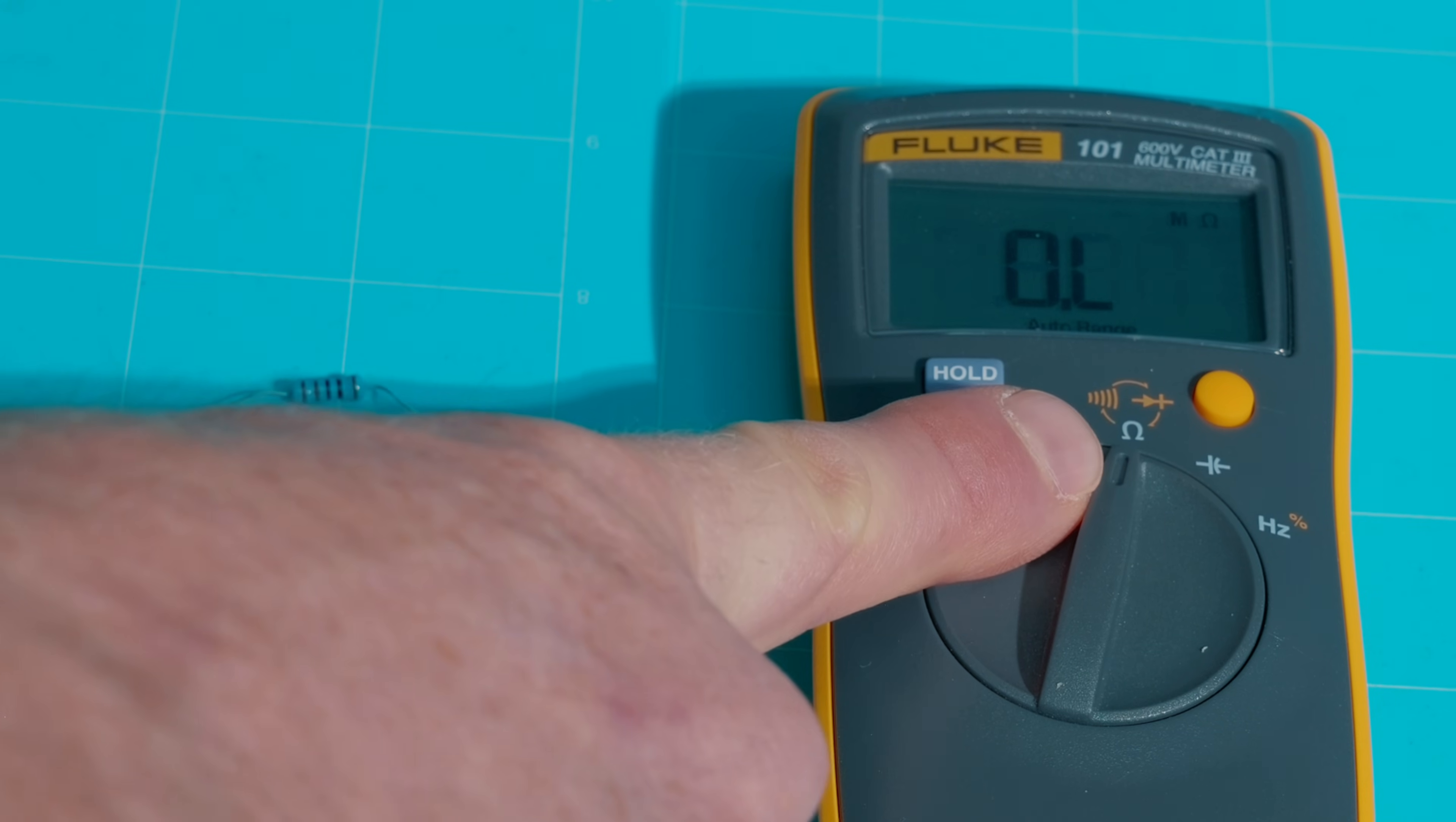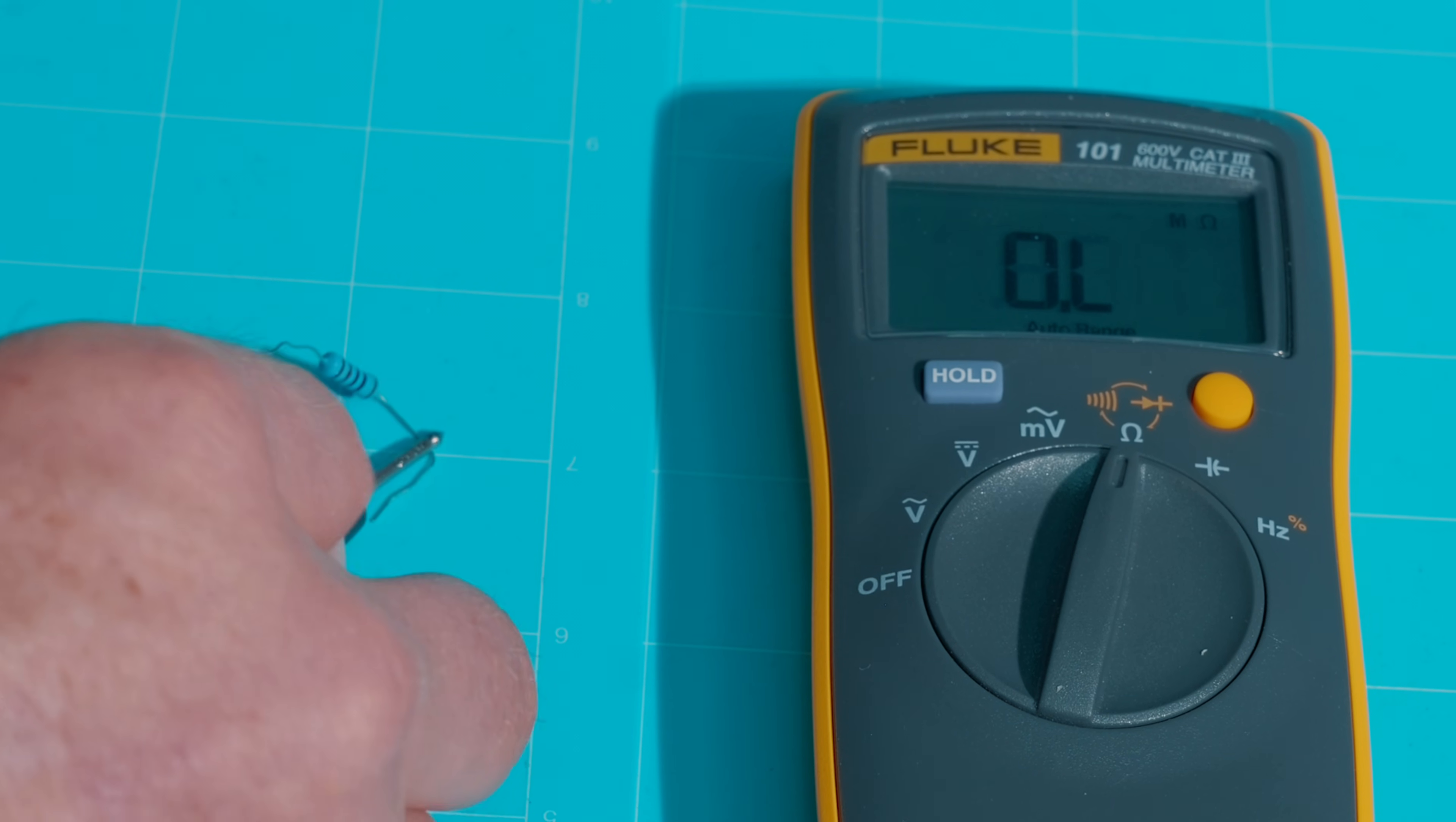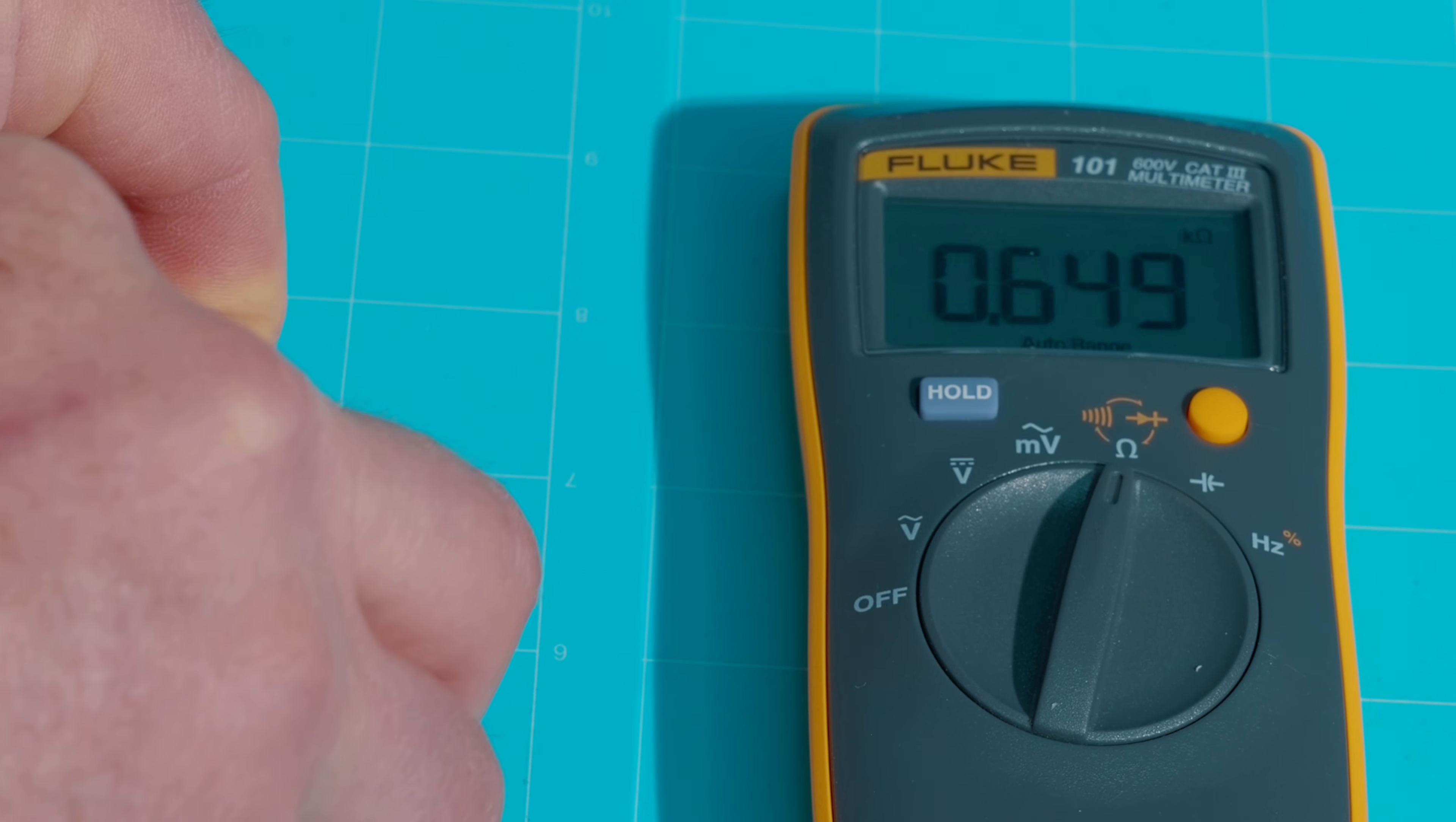Okay, and for the omega resistance setting right there, I'm going to demonstrate on this simple 1,000 ohm resistor. You just place a lead, doesn't matter which one, across both sides of your resistor. And as you can see, I've got about 1.005k ohms. So that's about 1,000 ohms on this resistor.